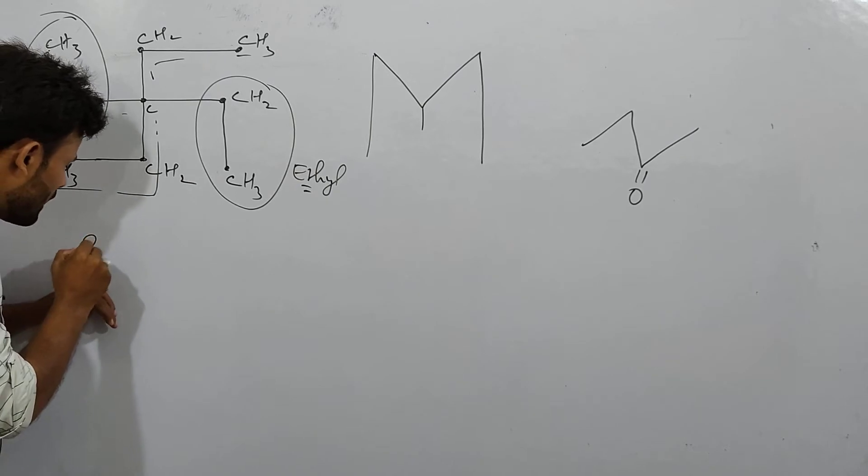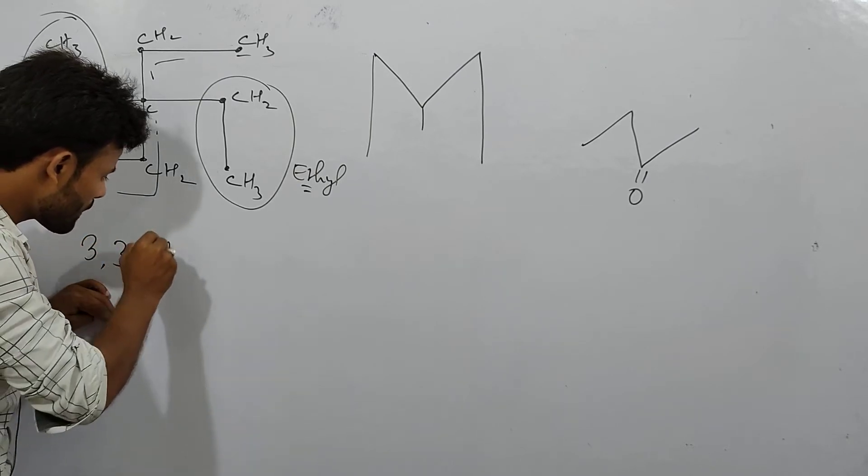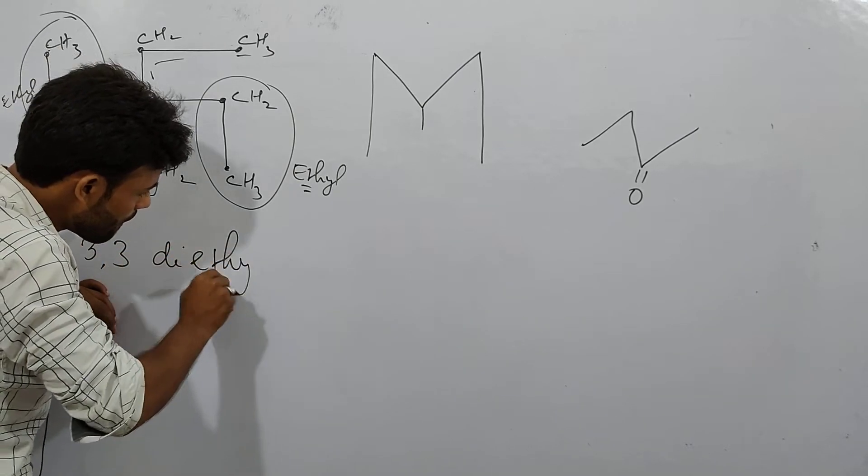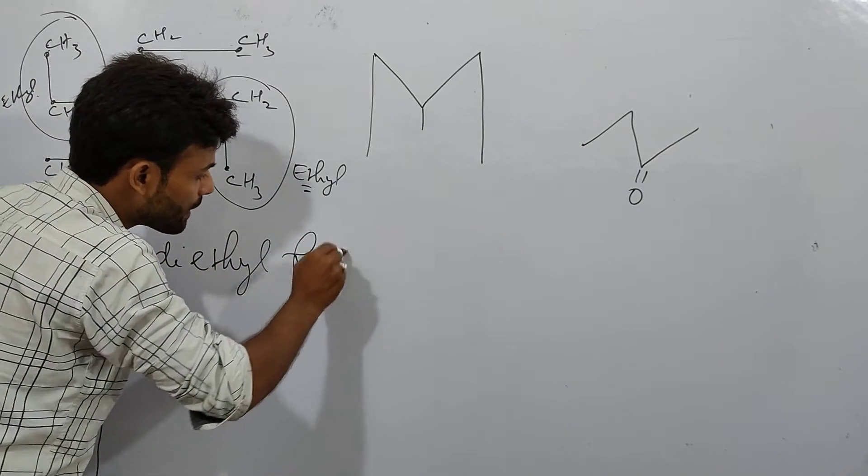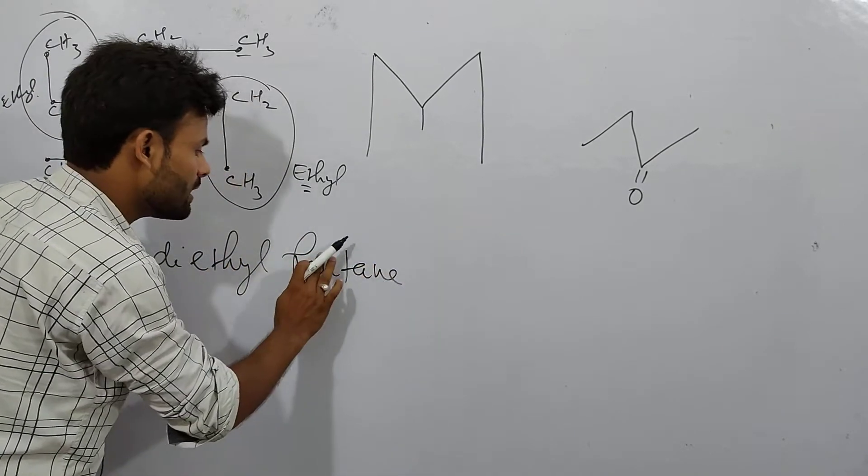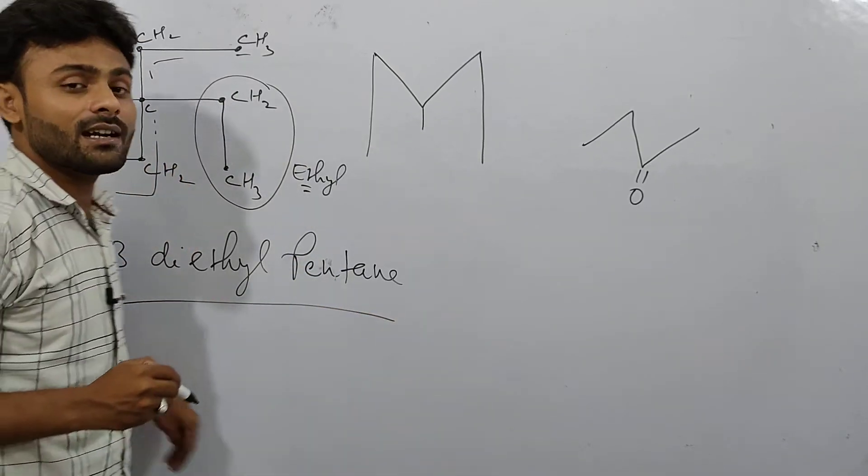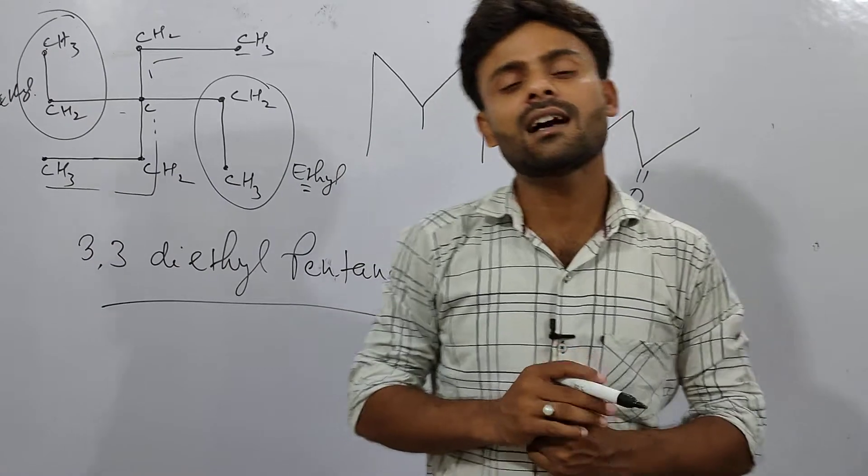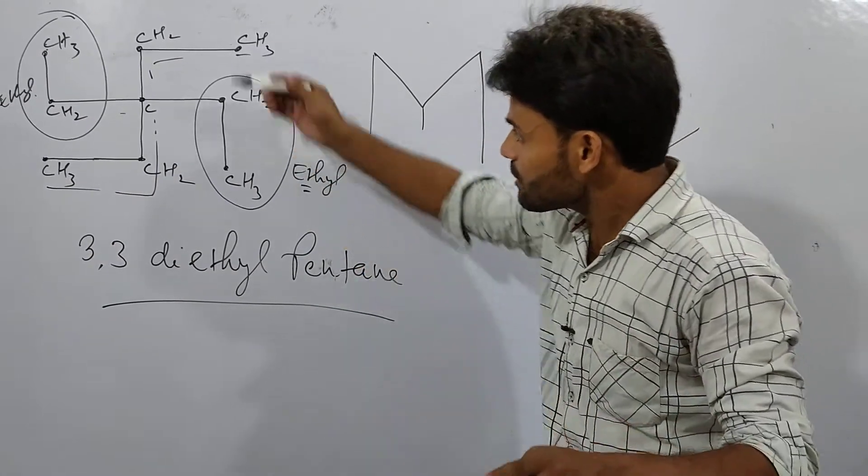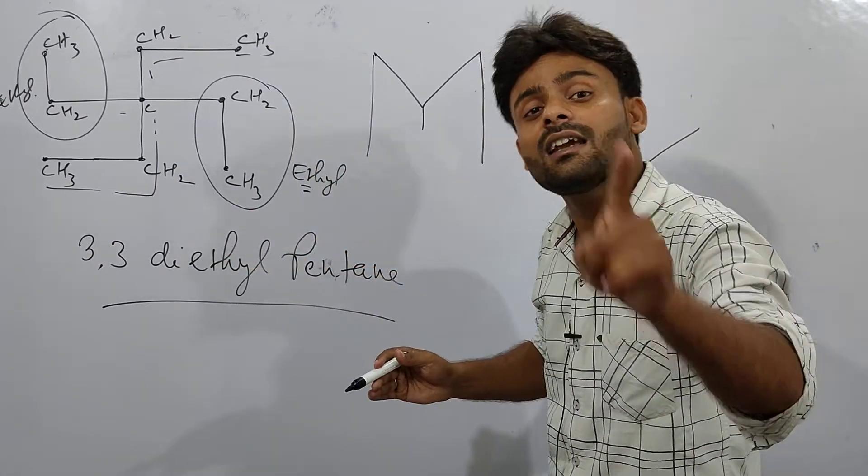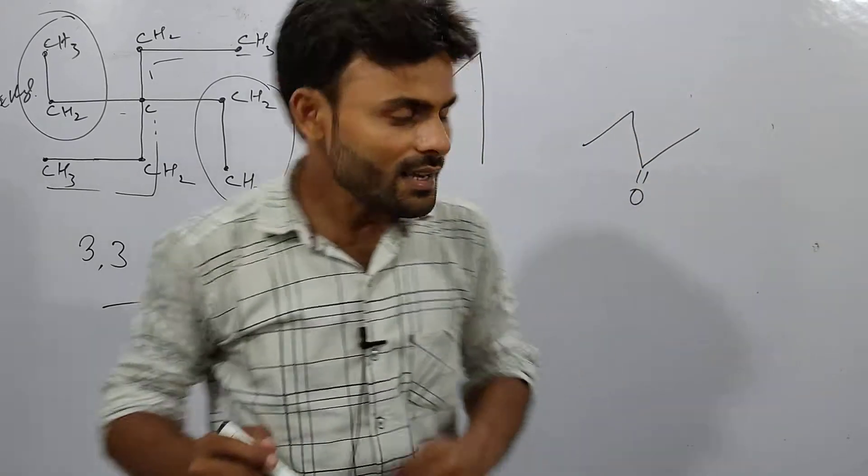What is the name of this? 3,3-diethylpentane. Do you understand? 3,3-diethylpentane. What is the name of the swastika in chemistry? We always remember, 3,3-diethylpentane. Clear? Let's go.